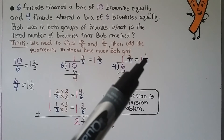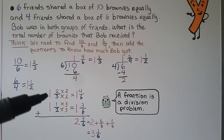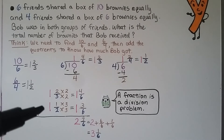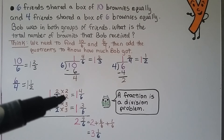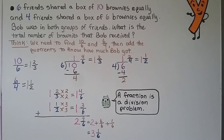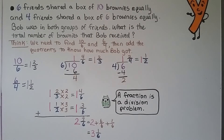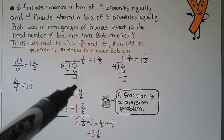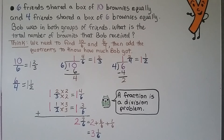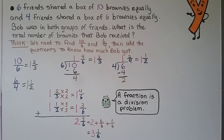Now we add 1 and 2 thirds plus 1 and 1 half to find how much Bob got. They need a common denominator — we multiply 3 times 2 to get 6. 2 thirds becomes 4 sixths, and 1 half becomes 3 sixths. We add the numerators to get 7 sixths, and the whole numbers to get 2, giving us 2 and 7 sixths. Since 7 sixths equals 1 whole and 1 sixth, we get 3 and 1 sixth. Bob received 3 and 1 sixth brownies.